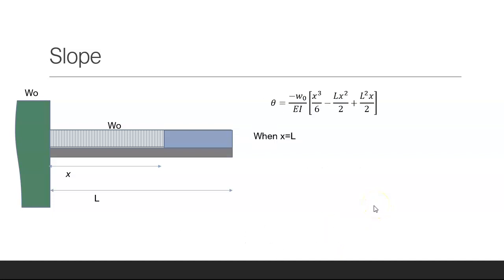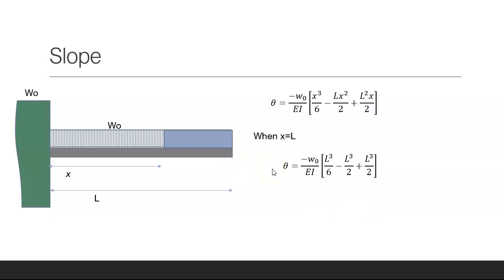If I want the maximum slope it will occur when x is equal to L. Substituting L in for x, I get that the maximum slope is w naught L cubed over 6EI.